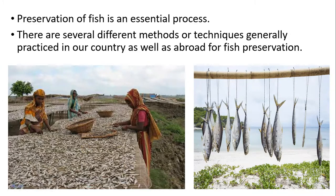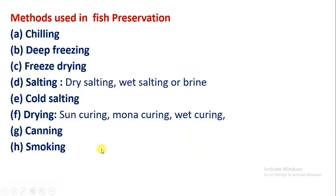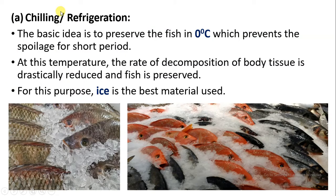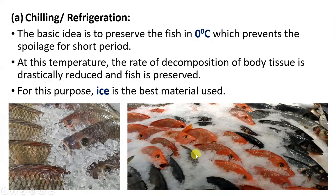Preservation of fish is an essential process. There are different types of methods and techniques practiced in our country and outside the country. The first method is chilling, or refrigeration. It is a basic method of preserving fish at zero degree Celsius, due to which the decomposition of fish slows down and we can preserve the fish for a short duration. The fish decomposition is reduced and slowed down.